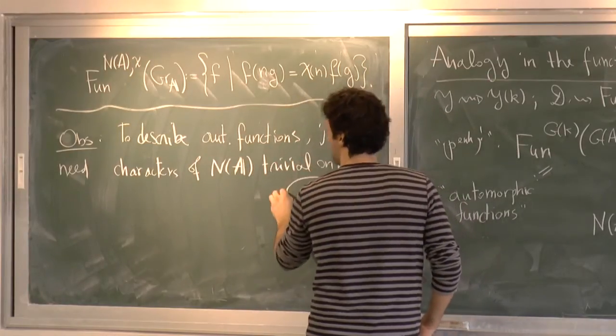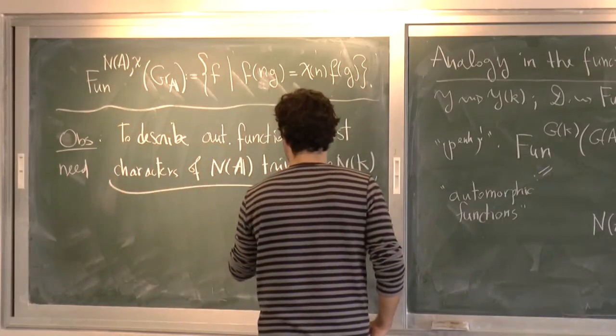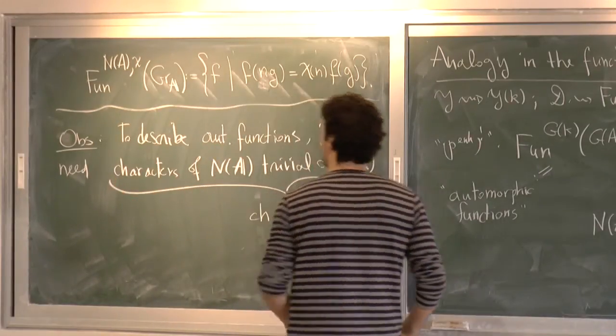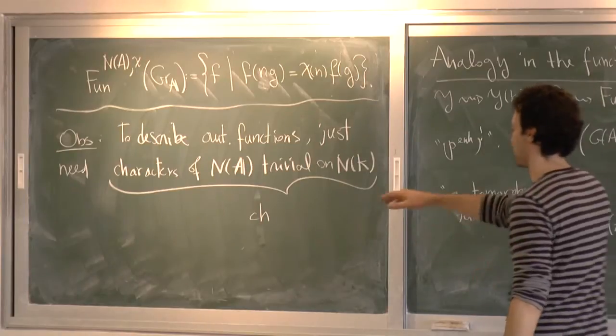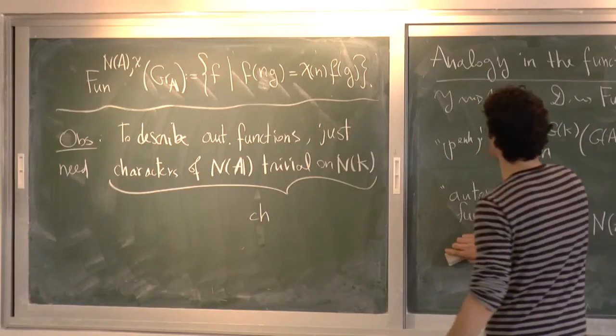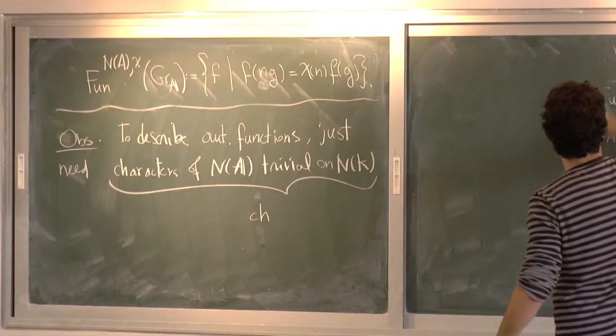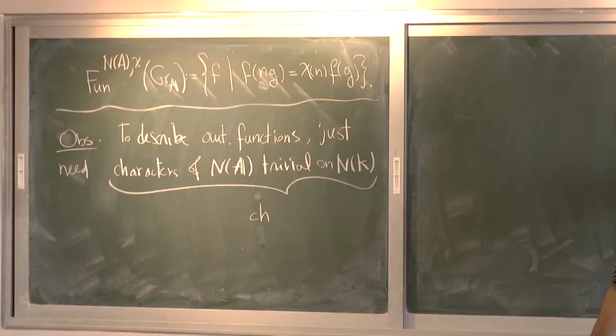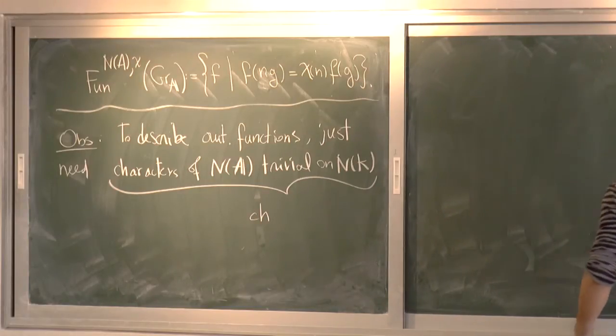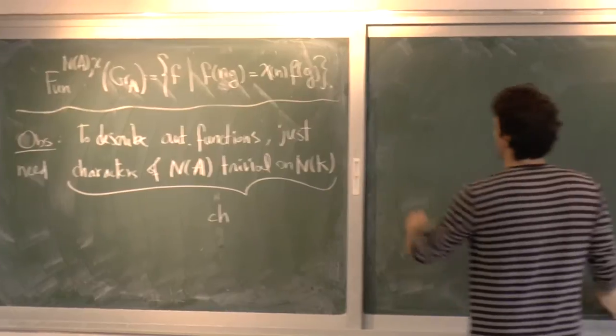So need characters of N of A trivial on N of K. And let's give this, I'd like to space a name. I call it CH. Mathfrak CH. All right. So let's see what these characters are.